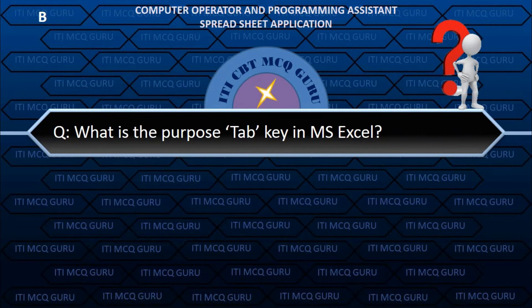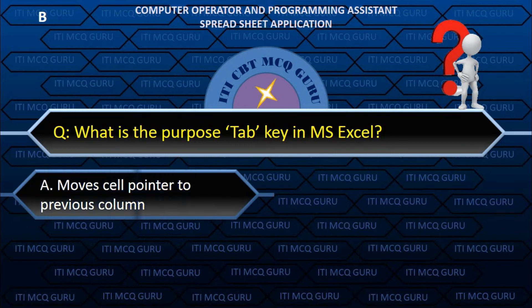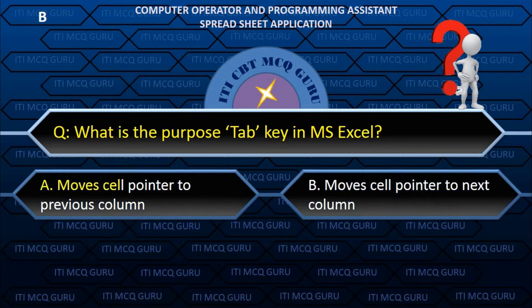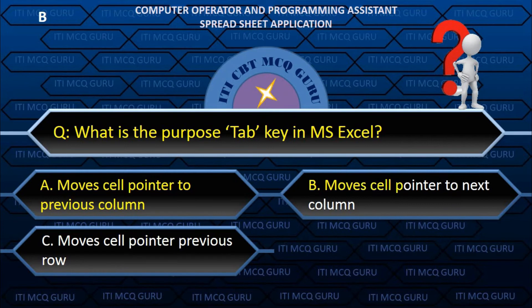What is the purpose of the Tab key in MS Excel? B. Moves cell pointer to next column.